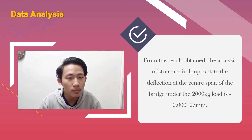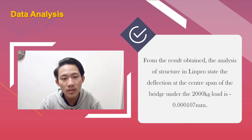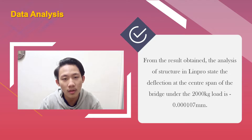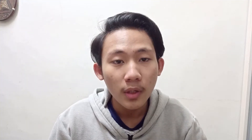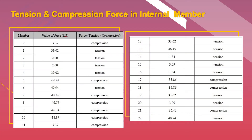From the result, the deflection was negative 0.00107 millimeters. From the LimPro analysis, you can get the result of internal forces in 23 members in total. These are the internal forces in tension and compression.